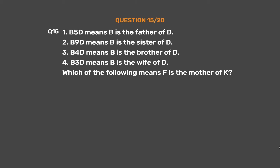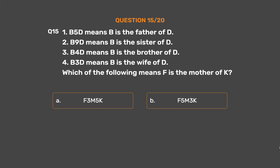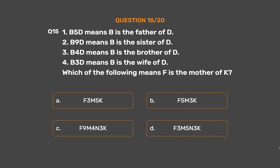Question number 15. Given: (1) B5D means B is the father of D; (2) B9D means B is the sister of D; (3) B4D means B is the brother of D; (4) B3D means B is the wife of D. Which of the following means F is the mother of K? Option A: F3-M5-K. Option B: F5-M3-K. Option C: F9-M4-N3-K. Option D: F3-M5-N3-K.